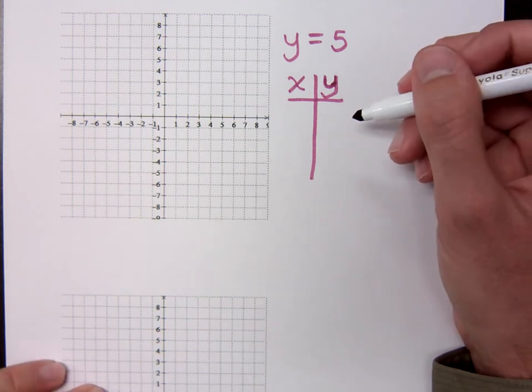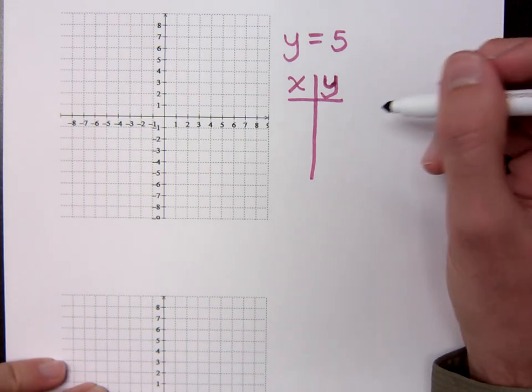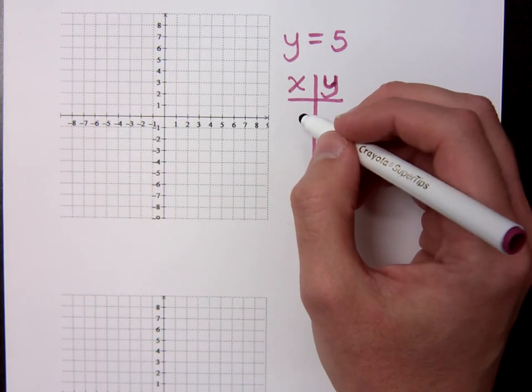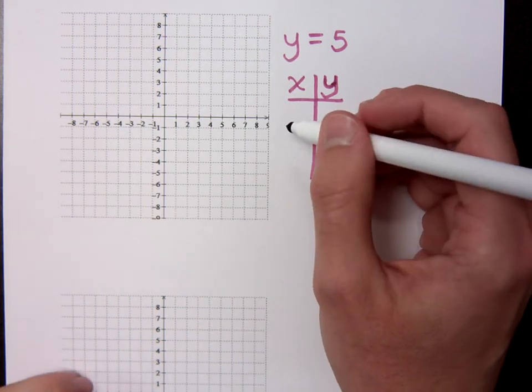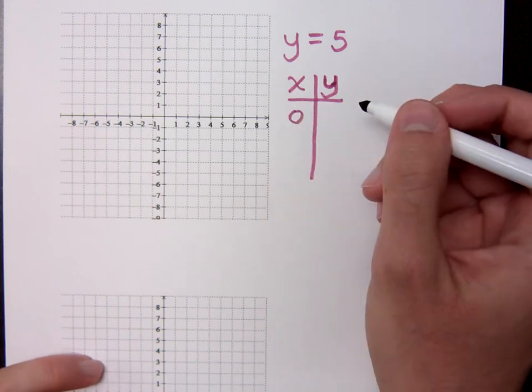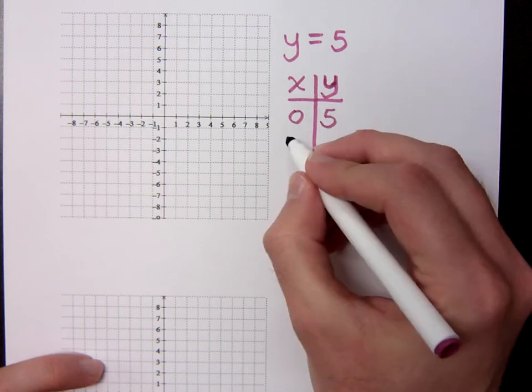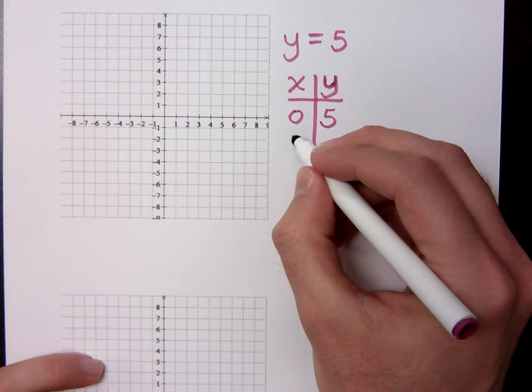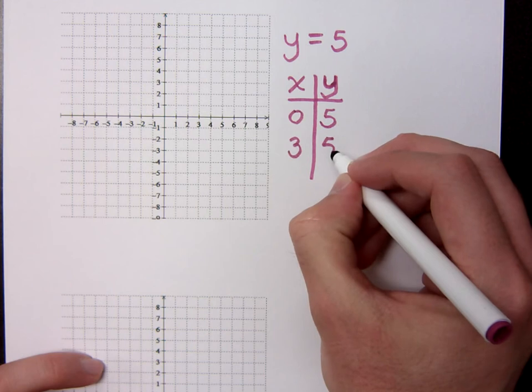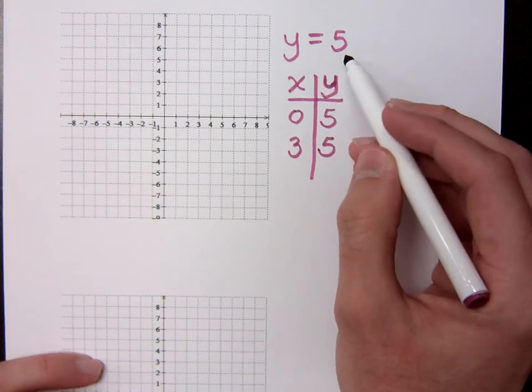Even though she goes clubbing and all the guys are hitting on her with things like, girl, if you were a booger, I'd pick you first. And she's like, no, thank you, I'm just going to be a 5. And he says, hey, I lost my phone number, could I have yours? No, she's still going to be a 5, right? Because, see, it doesn't matter what x is, because there's no x here, y's just going to be 5, right?